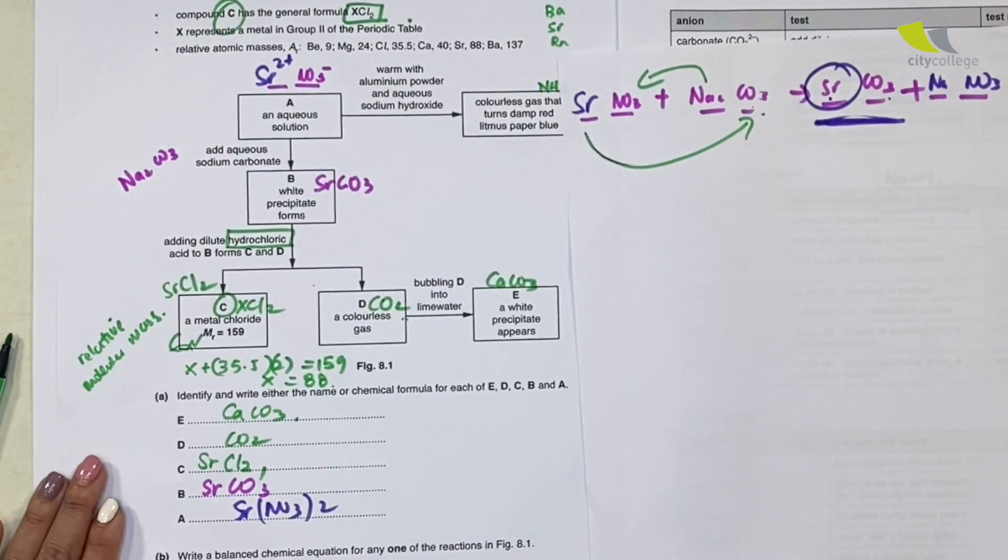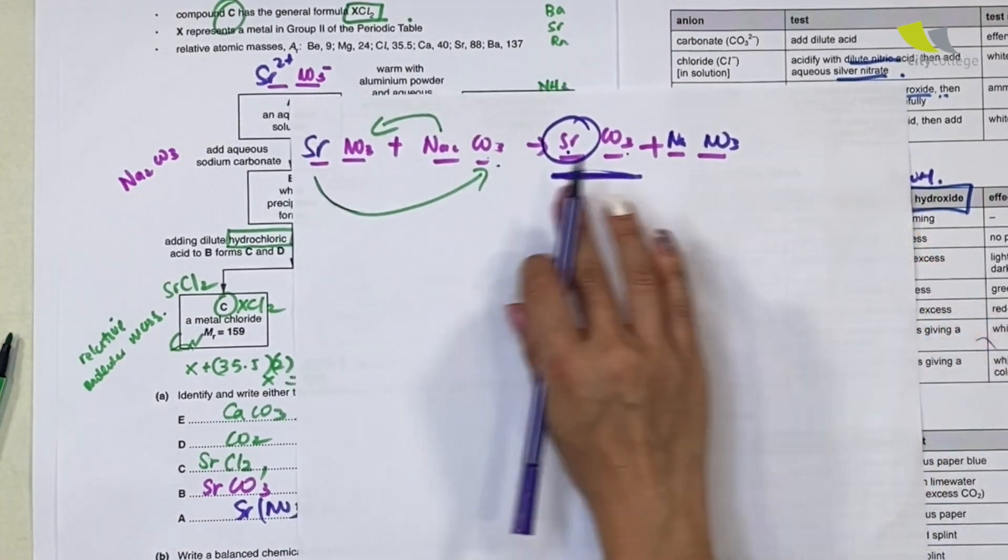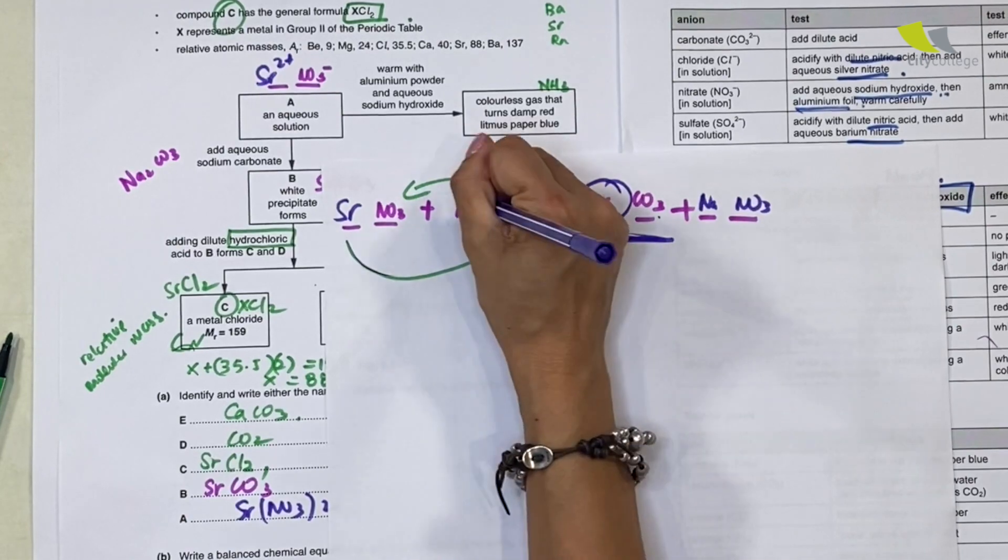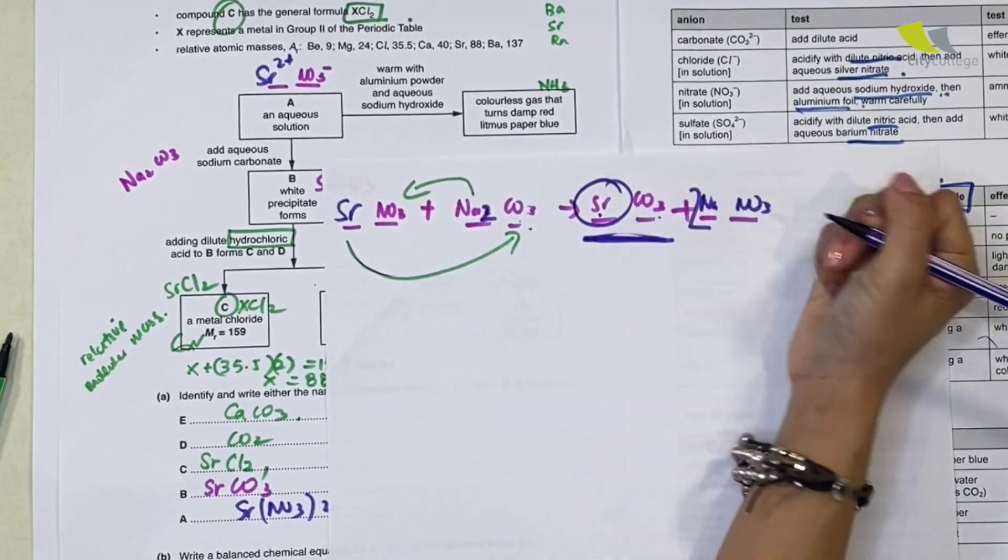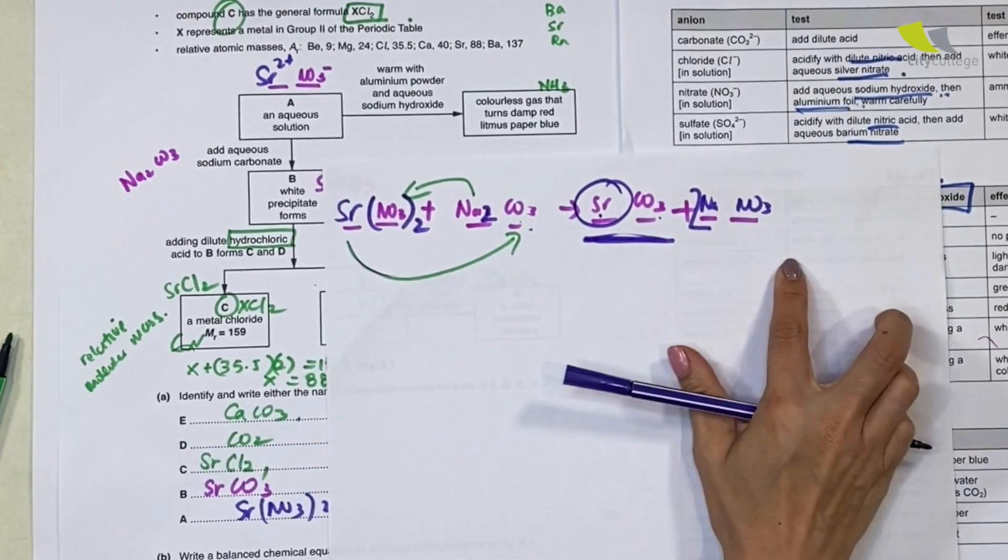So my 8-line still works. Who is my A? A here is Sr(NO3)2. Make sure that Sr, you remember, is 2+ and NO3 is minus. So I know it's Sr(NO3)2. If you notice this entire listing to identify it, they give you a hint. They guide you by going from E to D to C to B to A. If you follow this arrangement, you know they are scaffolding this entire question, guiding you how to find this.